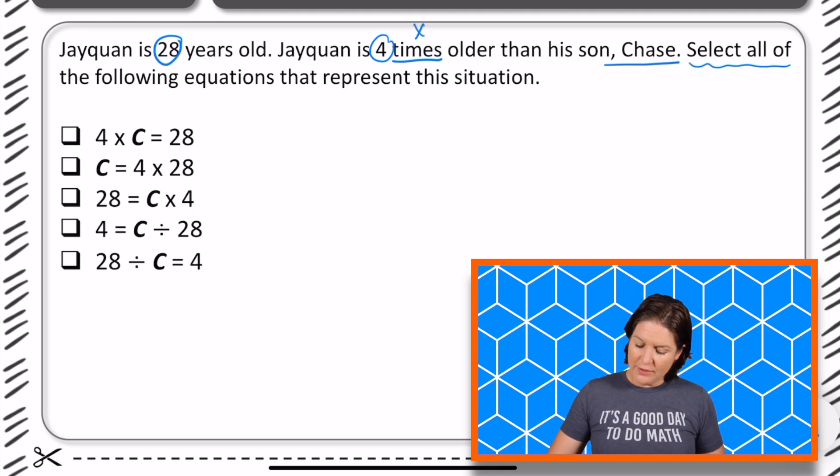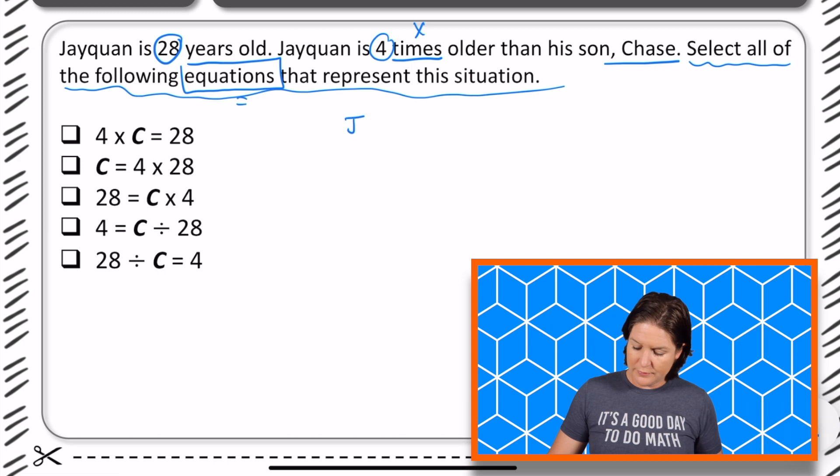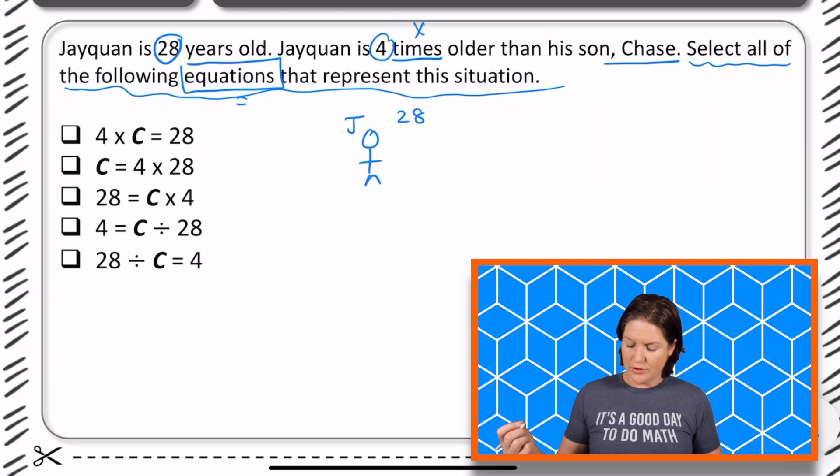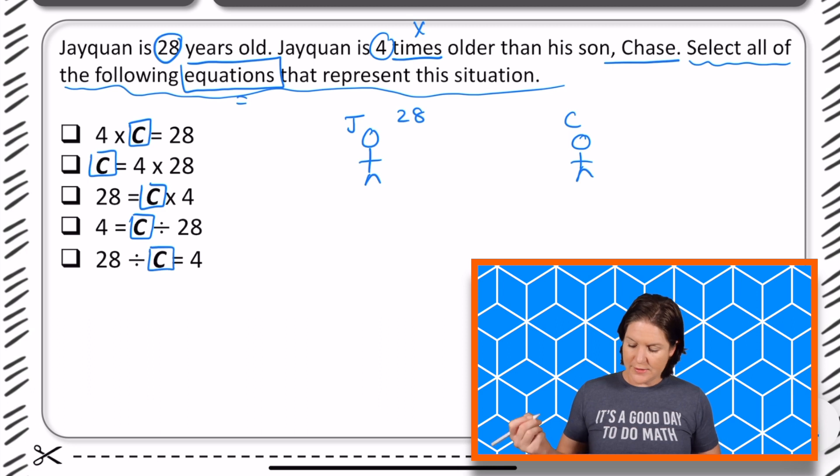Select all of the following equations to represent the situation. So equations means that we have an equal sign present, which if you look at all of the answer choices, there is an equal sign. So those are definitely equations there. We know that Jaquan, we've got somebody named Jaquan and he is 28 years old. He has a son named Chase and we are not sure how old Chase is. So that's why the C that you see in all of these answer choices represents the age that Chase is. C stands for Chase in this case.